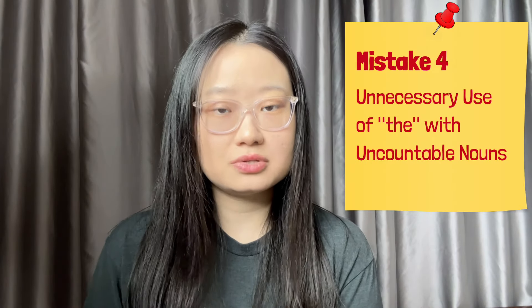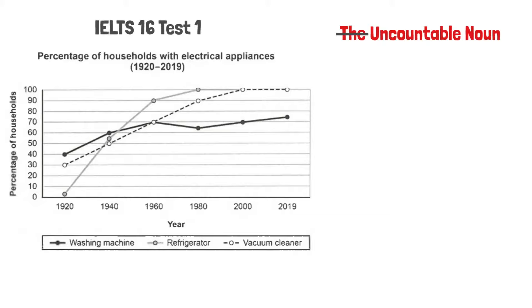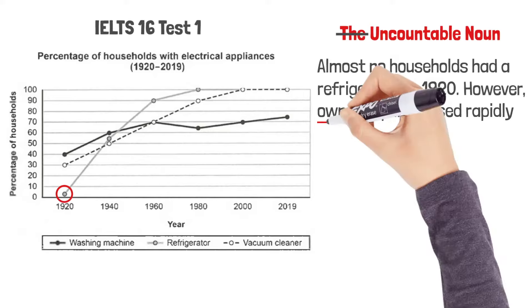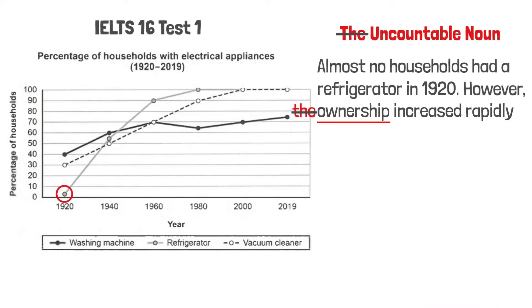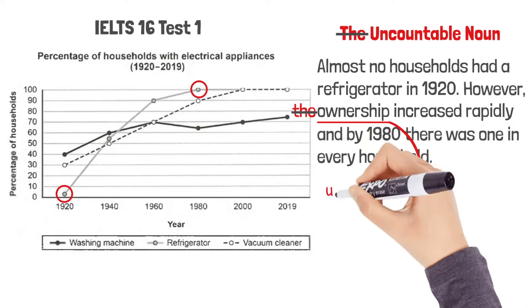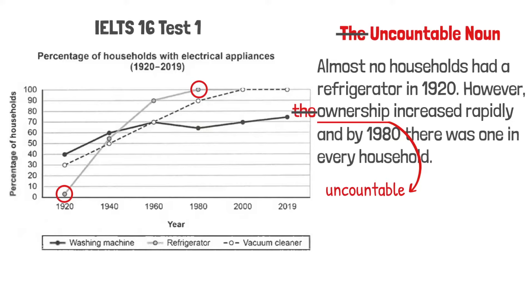Next up, let's talk about the definite article. Often you don't need to use it with an uncountable noun. Let's look at this graph again. When describing refrigerators, we can say that almost no households had a refrigerator in 1920. However, ownership — not 'the ownership' — increased rapidly, and by 1980 there was one in every household. 'Ownership' is uncountable, so it's grammatically correct to just say 'ownership.' The definite article is unnecessary, and the meaning is clear — in context it will be interpreted as refrigerator ownership. So just say 'ownership,' not 'the ownership.'